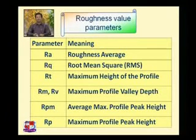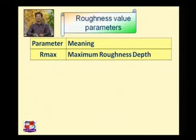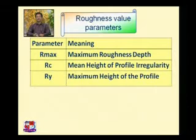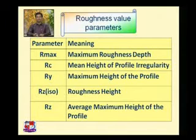RP means maximum profile peak height — average is not included. RMX means maximum roughness depth. RC means maximum height of profile irregularities. RY indicates maximum height of the profile. RZ ISO means roughness height as shown in the drawing. RZ means average maximum height of the profile.